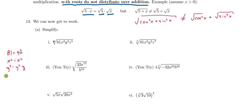Then we have this factor y cubed, which we could think of as y squared times another factor of y — that's using our property of exponents. And lastly, z to the fifth: I could write it as z squared times z squared times z, but I'm going to write it as z squared, squared.